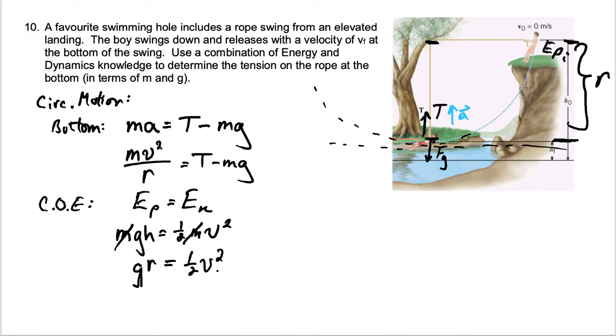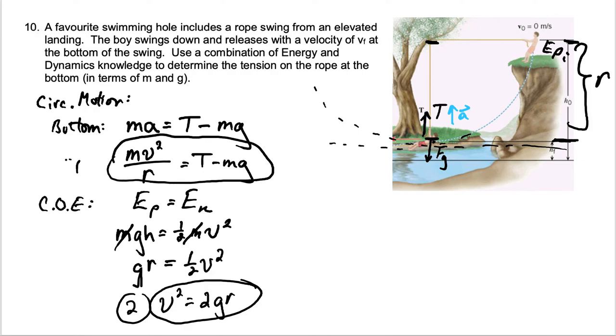So when I solve this, notice I've got v squared in my first equation and v squared down here. If I solve this for v squared, I get 2gr. So there's equation 2. This one was equation 1. And we're going to substitute equation 2 into equation 1. So wherever I see a v squared in equation 1, I'm going to replace it with a 2gr.